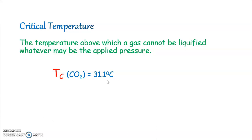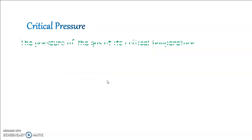At the critical temperature, a certain pressure is needed to liquefy the gas. It is known as critical pressure. That is, critical pressure is the pressure of the gas at its critical temperature. It is denoted by Pc and for carbon dioxide, the critical pressure is 72.9 atm at critical temperature.